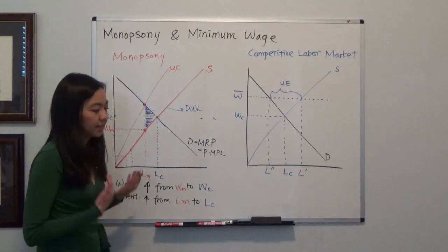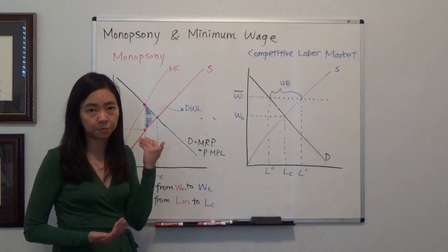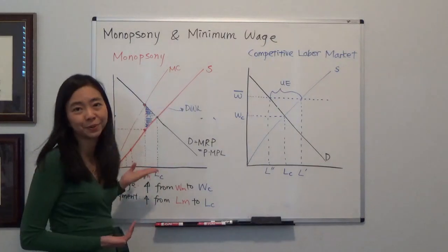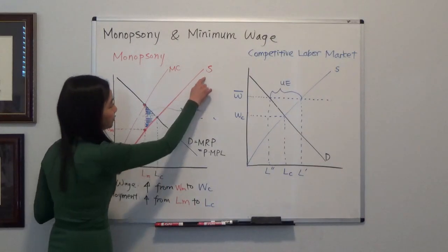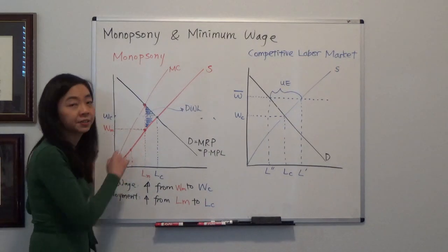Now, the company is a monopsony, so it alone faces the supply curve of the labor in the market. So that's the supply curve. And the marginal cost curve is going to sit above the supply curve.